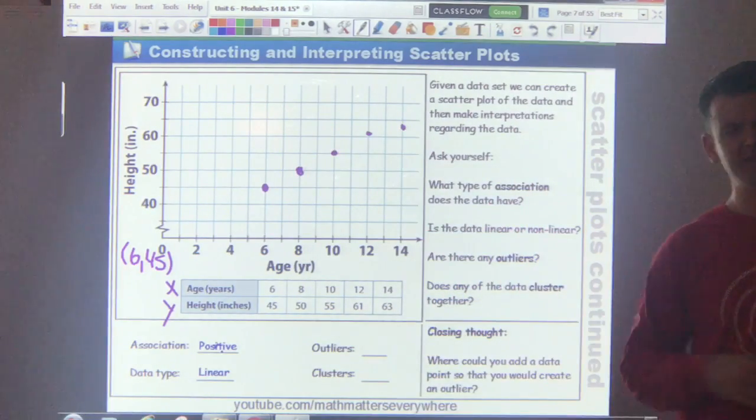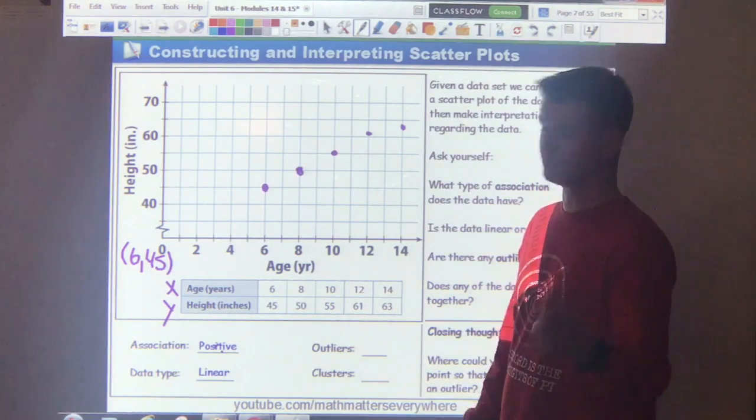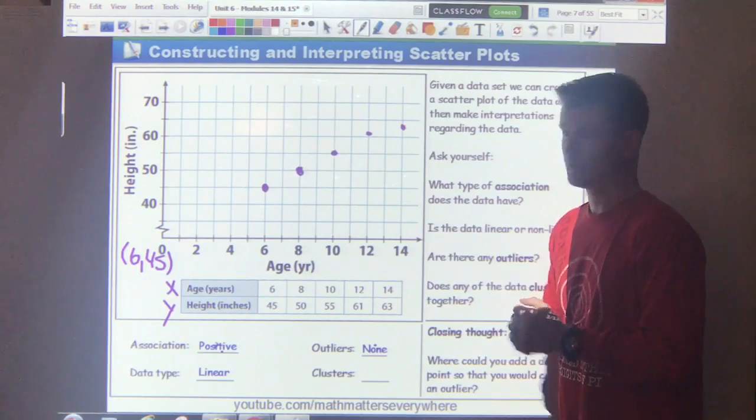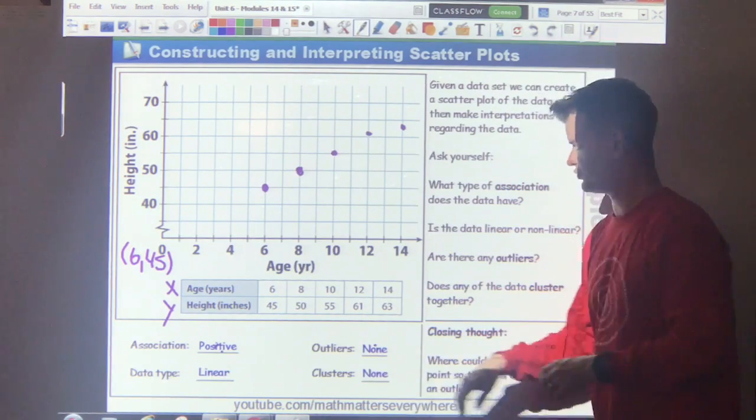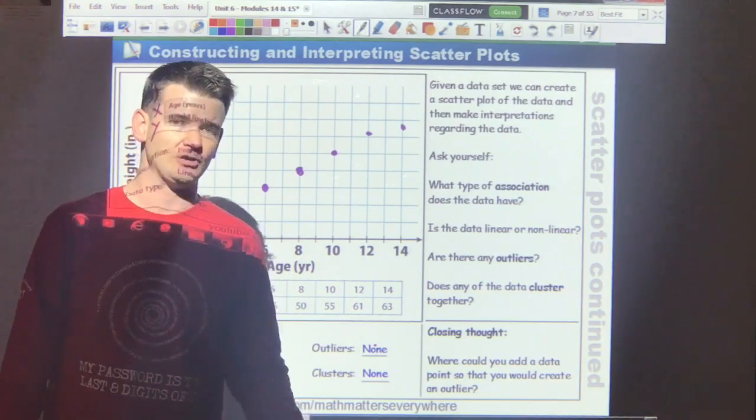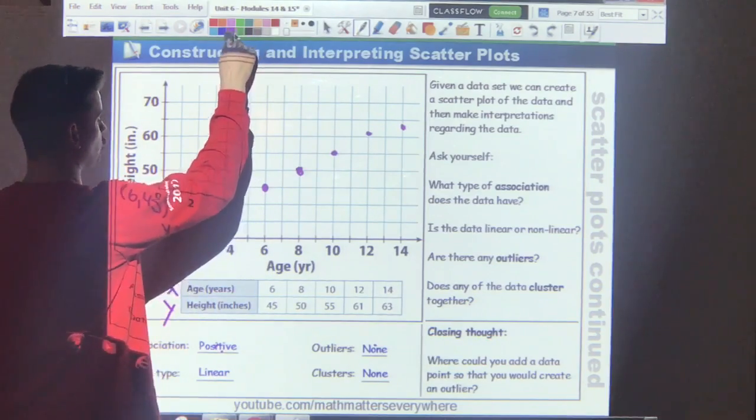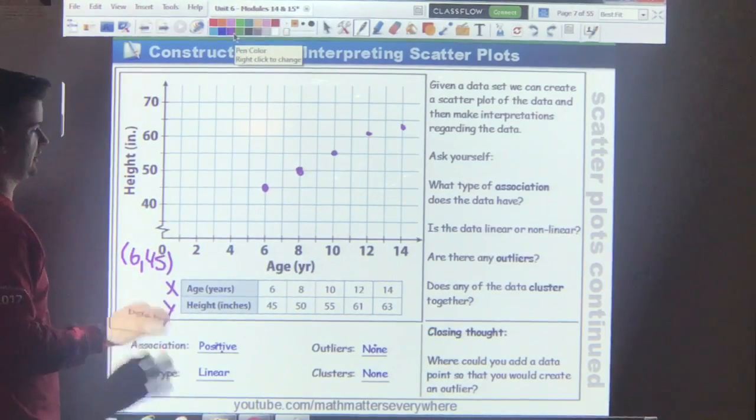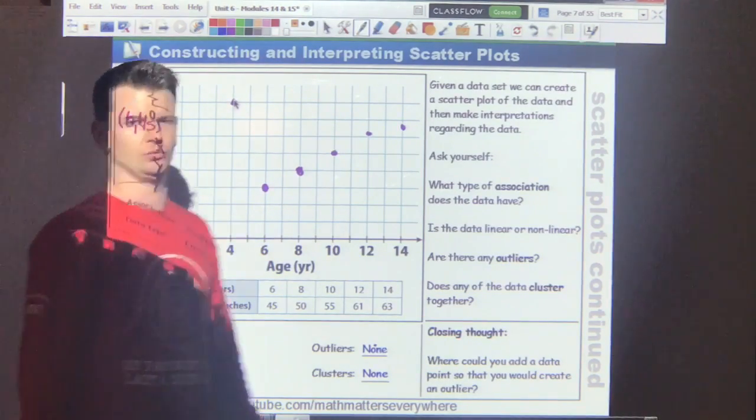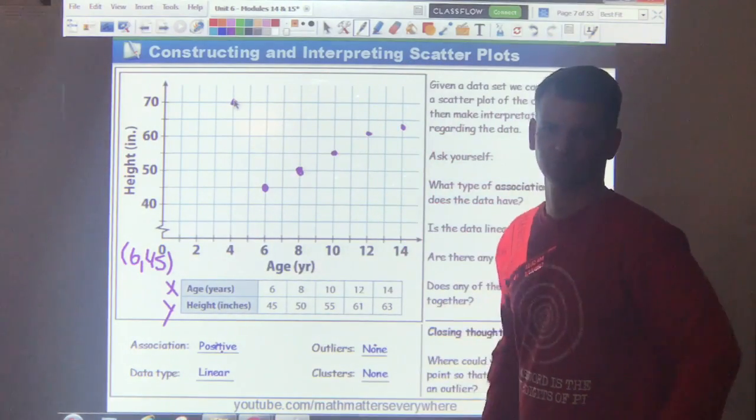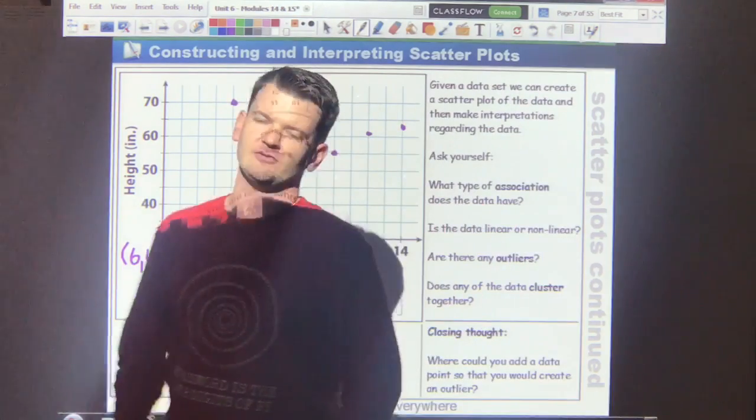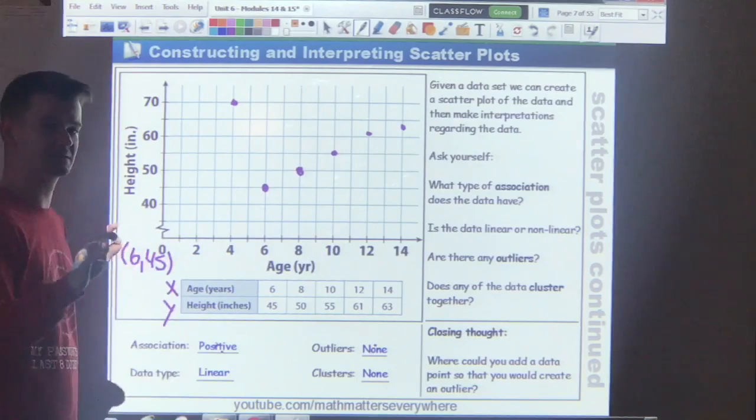Do you see any outliers here? Any data that's kind of far away from the rest of the data? No. Neither do I. No outliers. And there's no clusters here either. Most of the data is kind of the same distance apart. So there's no clusters. Now, could I add a point here that may give us an outlier? Sure. Well, what if we had a really, really big four-year-old? A four-year-old who was maybe 70 inches tall? Whoa! That's a big baby! That would be an outlier because it's far away from the rest of the data. So know what outliers are, know how to graph coordinate pairs, and you're on your way to truly understanding scatter plots.